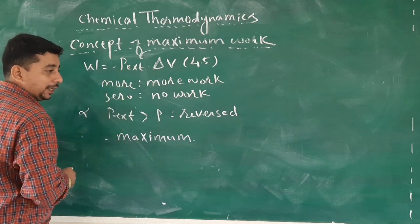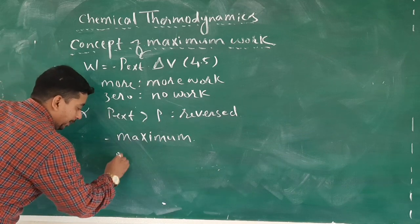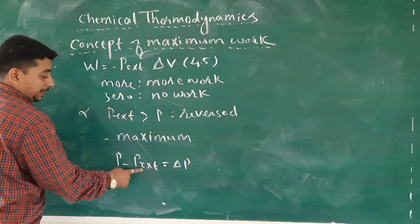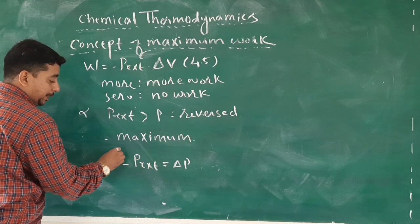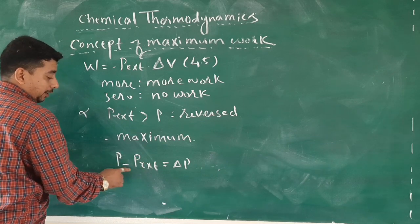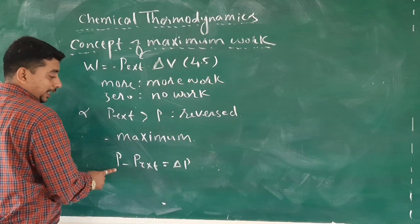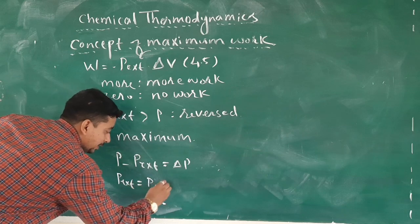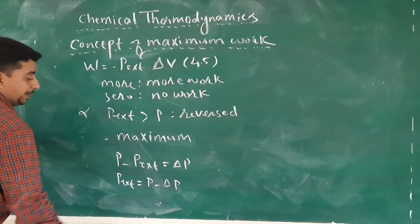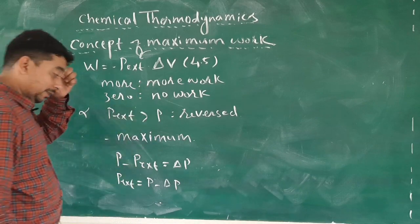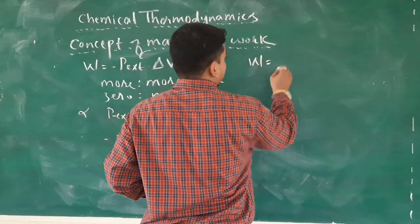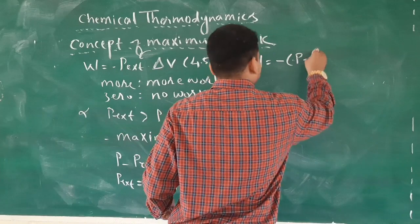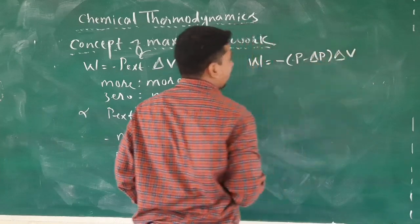If the difference between the pressure of the gas and the external pressure is ΔP, then P − P_ext = ΔP, so P_ext = P − ΔP. Substituting the value of P_ext into equation number 4.5, we get w = −(P − ΔP) × ΔV.